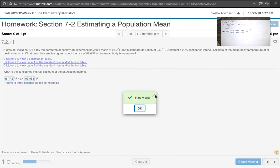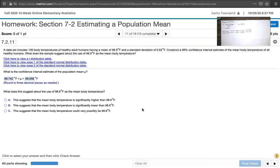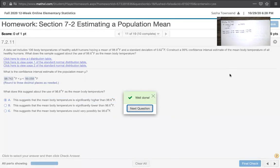Now, the next part of the question is about interpreting this confidence interval. What does this suggest about the use of 98.6°F as a mean body temperature? That depends on whether 98.6°F is in our interval or not. The lower bound is 98.742, so 98.6°F is not in this range. Since this value is not in this range, we wouldn't expect that to be the mean body temperature. This suggests the mean body temperature is significantly higher than 98.6°F because 98.6 is below our lower limit.